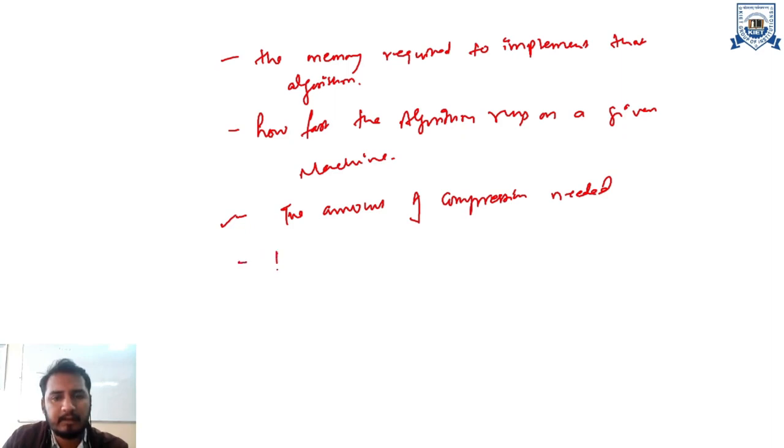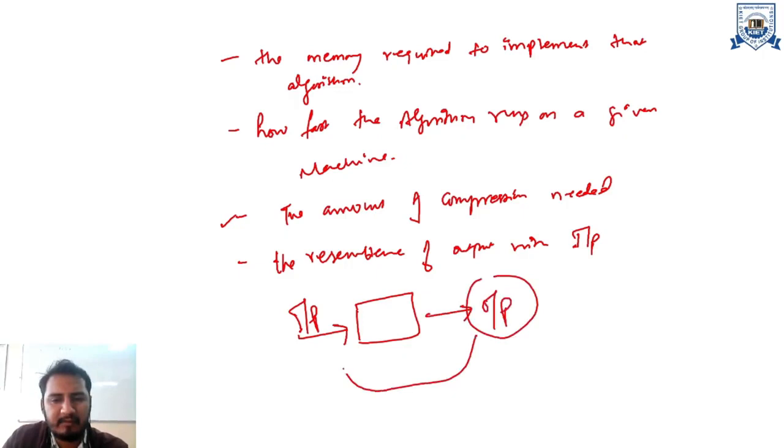And the resemblance, the resemblance of output with input. Suppose that this is your data compression system and you have given an input as an image. Now, you have obtained a compressed image. Then you will measure the similarity between this output and input. Whether this output image is able to retain all the information that were provided by this input image or not is measured by the resemblance of output with input.